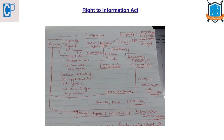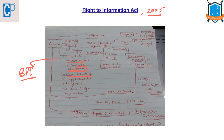Under the RTI Act passed in 2005, citizens have the right to acquire information from public authorities. A citizen can file an application in English or any other language along with an application fee — this fee is exempted for BPL families. The citizen can also ask for information orally by providing contact details, and need not provide any reason for requesting the information.